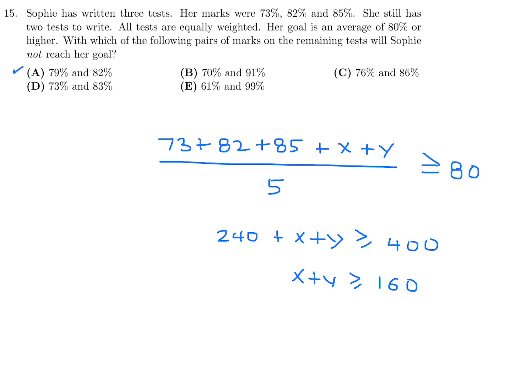Let's check which answer choices satisfy X plus Y greater than or equal to 160 and which don't. This one does, this one does, this one does, this one does — but 83 plus 73 is only 156, so that is the only pair that does not meet our condition. Number 15, the answer is D.